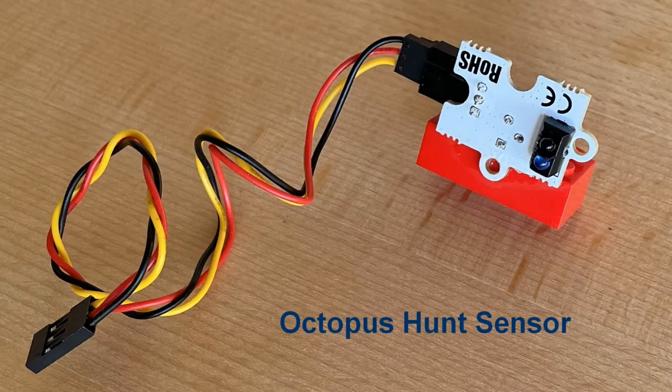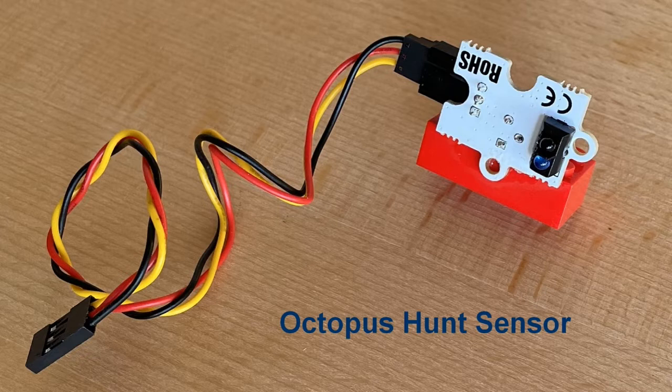For that purpose we need a so-called HUNT sensor which I have glued to a Lego brick. It contains a LED that emits infrared light and a sensor that can detect if some of the light is reflected.